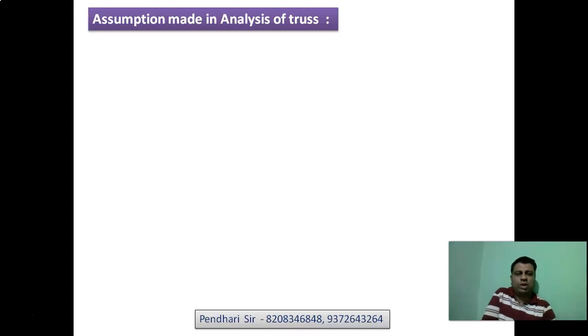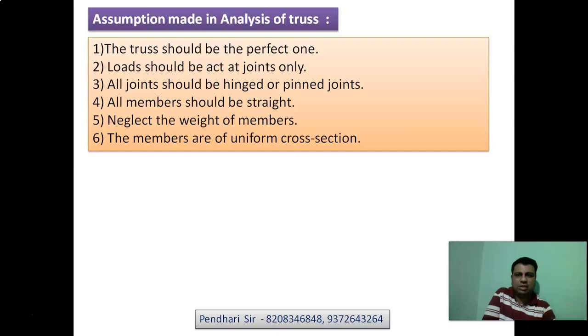Assumptions made in analysis of truss. First, the truss should be perfect one. Second, loads should act at joints only. Third, all joints should be hinged or pinned joints. Fourth, all members should be straight. Fifth, neglect the weight of members. Sixth, the members are of uniform cross-section.